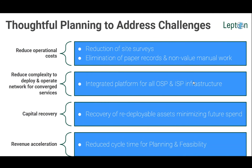Managing outside plant and inside plant in a single integrated platform — from the central office building to the customer — helps reduce complexity in planning and deploying converged services. By having a single system managing all assets, it's easy to understand asset spread, how assets are being used, and if there's additional capacity available for future expansion, enabling capital recovery. The biggest cost in telecom network operations is civil and fiber layout deployment. Using automation with intelligent algorithms like nearest neighbor and connectivity tracing, we can automate planning and feasibility activities, helping accelerate cycle times.